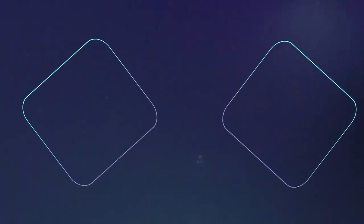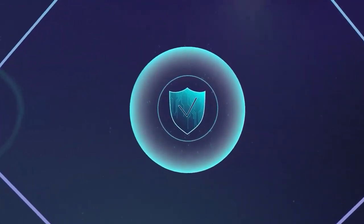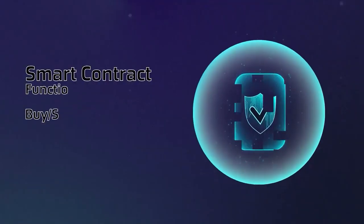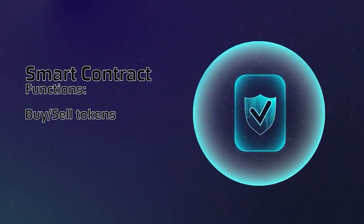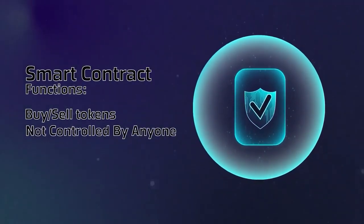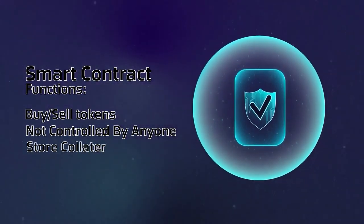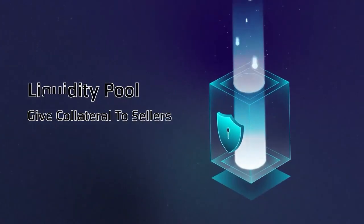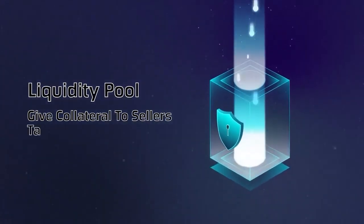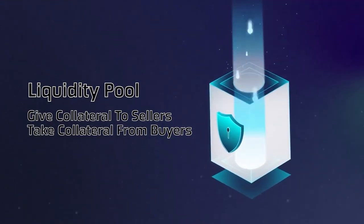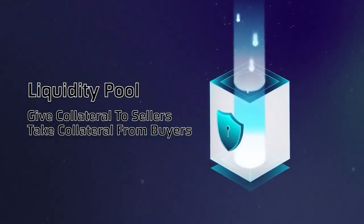In our case, the role of such a shop is performed by a smart contract created in the blockchain network. Its task is to sell and buy coins from those who want them. It is not controlled by anyone, cannot refuse to buy or sell, and is always ready to securely store the collateral for each coin. Coin collateral is called a liquidity pool — it is like a safe that gives out collateral only when users sell tokens, and accumulates it when users buy tokens.